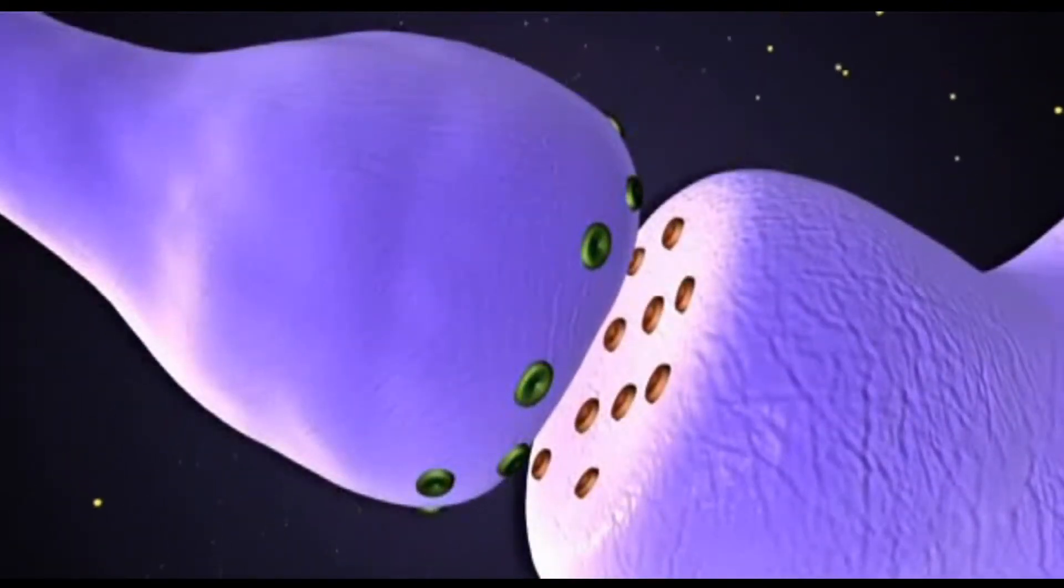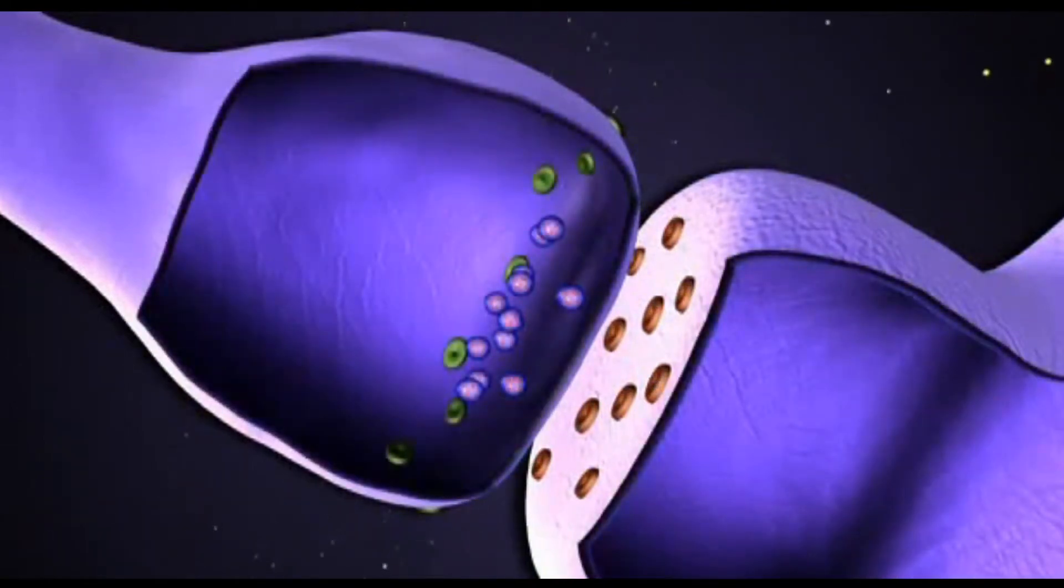There is the dendrite on the right, the synaptic terminal on the left, and as the impulse information comes down, these little green disks are channels in the synaptic terminal that open.